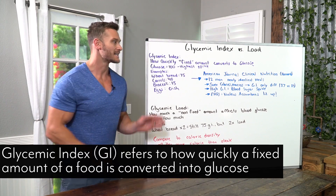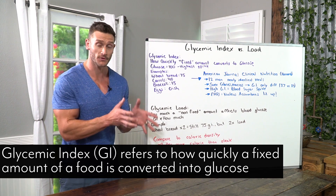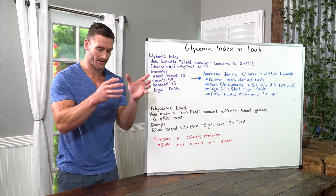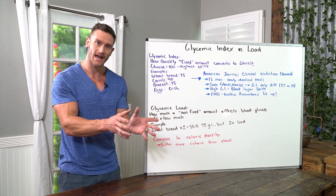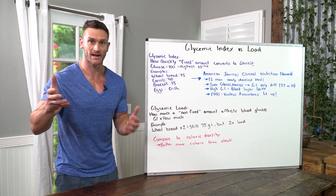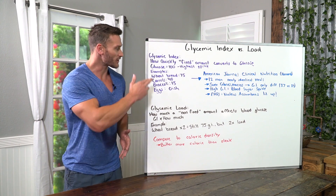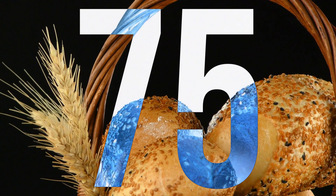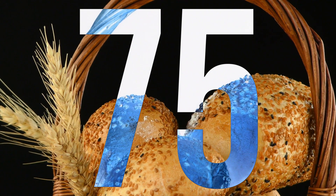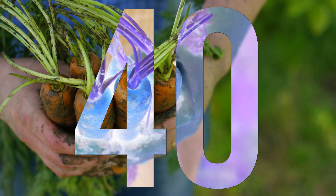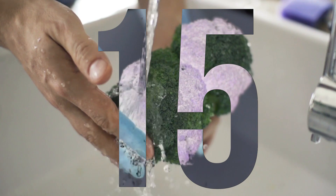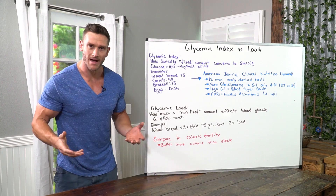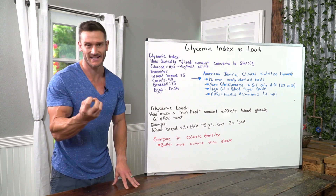Glycemic index is how quickly a fixed amount of food or carbohydrates get converted into glucose. So if you have one specific amount, how quickly does that elevate your blood sugar? Glucose itself is 100 — it's the highest point you can get to. For example, wheat bread is a 75, carrots are a 40, broccoli is a 15, and eggs are a zero. That's just how you measure the carbohydrate glucose density of something.